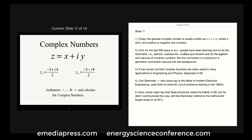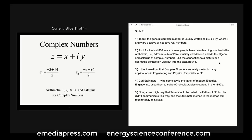Today the general complex number is usually written as z equals x plus iy, where x and y are positive or negative real numbers, just like in the cases we've solved before. For the last 300 years or so, people have been learning how to add, subtract, multiply and divide complex numbers, and do the algebra and calculus of complex numbers. But the connection to a picture — the geometric connection — was put into the background.